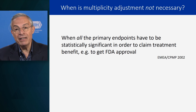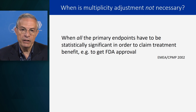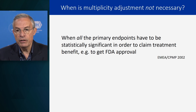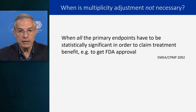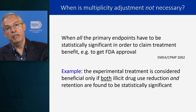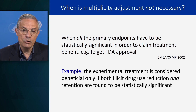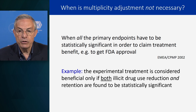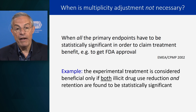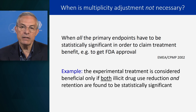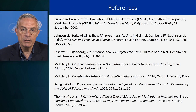When is multiplicity adjustment not necessary? When all the primary endpoints have to be statistically significant in order to claim treatment benefit — for example, to get FDA approval. This is a recommendation from the European agency in 2002. Going back to the previous example: the experimental treatment is considered beneficial only if both illicit drug use reduction and retention are found to be statistically significant. If you need both to claim efficacy or effectiveness, then you don't need to do a multiplicity adjustment.